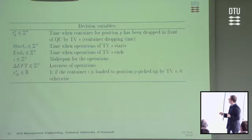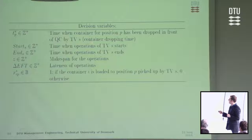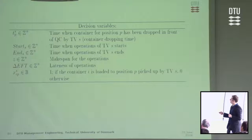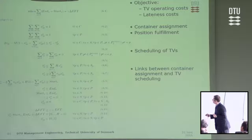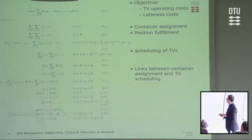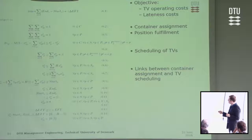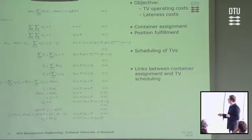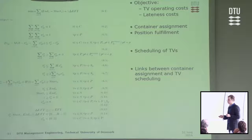Decision variables include: the dropping time for each position of each quay crane by given transfer vehicle, starting and ending times of working for each transfer vehicle, the makespan of all operations, lateness, and the variable handling the operative stowage plan. The objective function minimizes transfer vehicle operation costs and lateness costs. Constraints assign containers to positions, fulfill all positions, schedule transfer vehicles, link them together, and obtain lateness parameters.